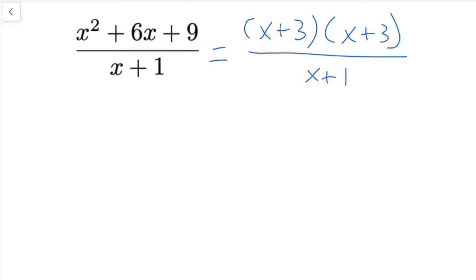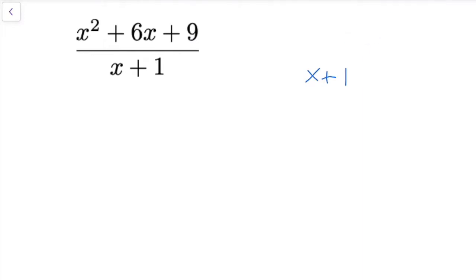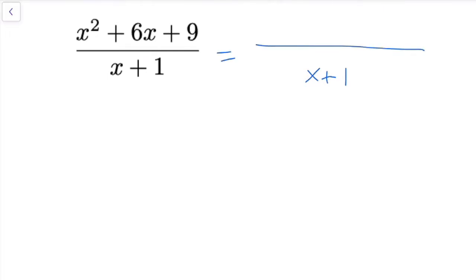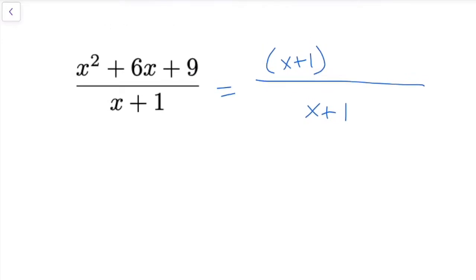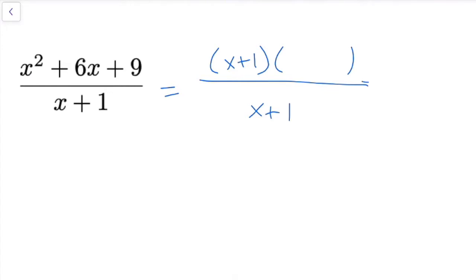We have x squared plus 6x plus 9. I'm going to erase the x plus 3 factoring because what we would really love to have as a factor is x plus 1, since there's an x plus 1 on the bottom. If we have the same factor in the numerator and denominator, we can cancel them out. X plus 1 isn't a perfect factor here, so we're going to have some extra stuff on the end — I'll leave some space to fill that in.